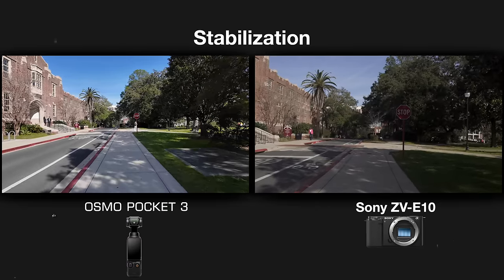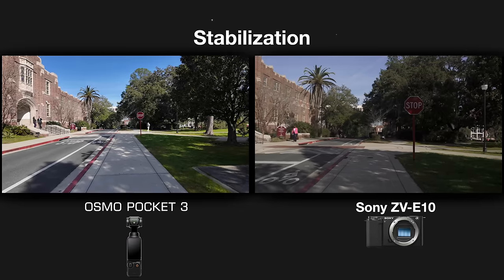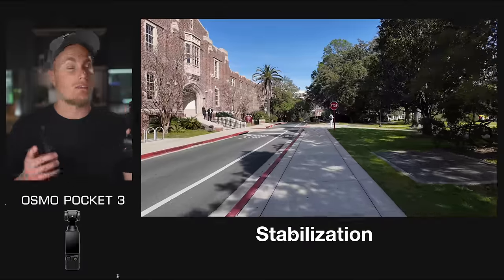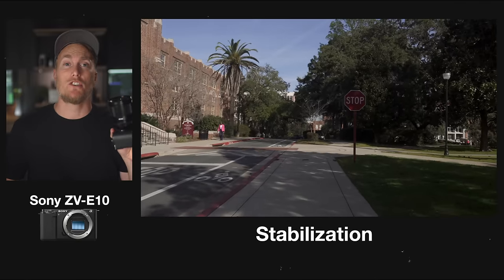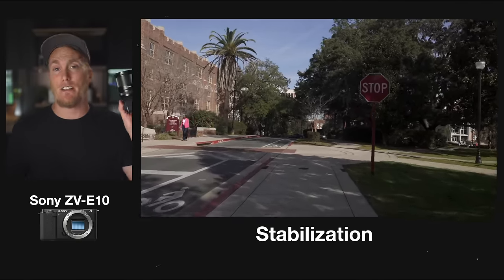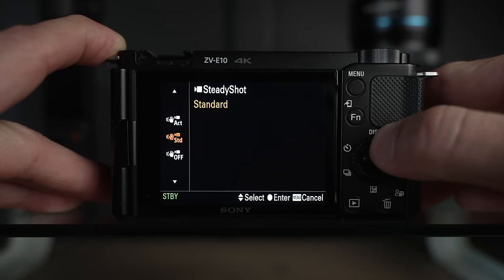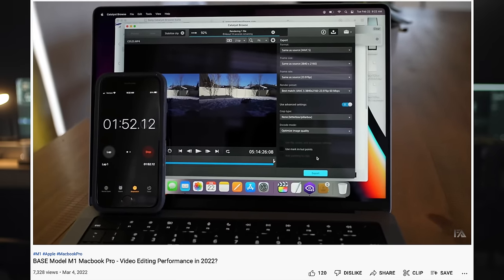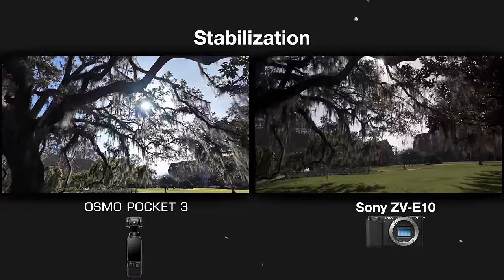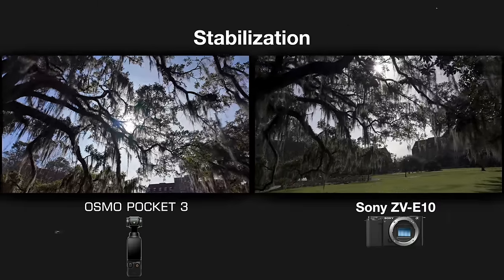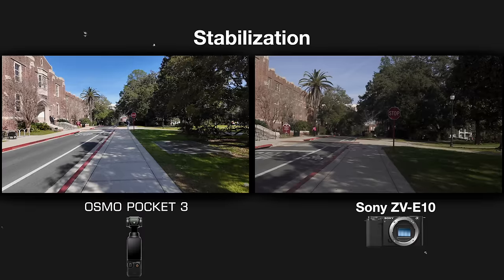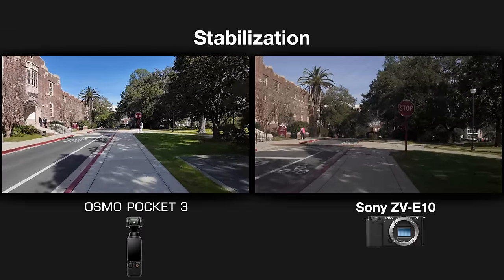The Pocket 3 has a built-in gimbal for amazing mechanical stabilization, whereas the ZV-E10 has digital stabilization that crops in about 1.5 times. The active stabilization on the ZV-E10 does not produce footage as stabilized as the Pocket 3, and depending on the lens and movement, you'll end up with a lot of unusable footage. If you want super smooth footage like the Pocket 3, you'll need to pick up a budget-friendly gimbal. You can also run ZV-E10 footage through Catalyst Browse to stabilize in post, but I've never been a huge fan of that extra step.